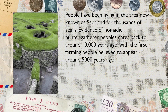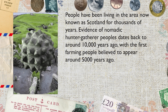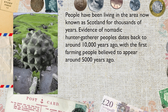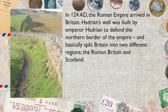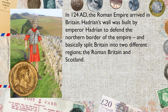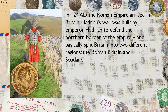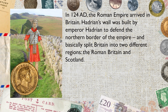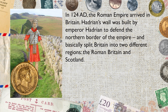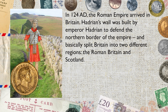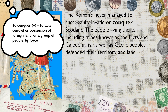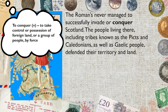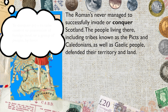People have been living in the area now known as Scotland for thousands of years. Evidence of nomadic hunter-gatherer peoples dates back to around 10,000 years ago, with the first farming people believed to have appeared around 5,000 years ago. In 124 AD, the Roman Empire arrived in Britain. Hadrian's Wall was built by the Emperor Hadrian to defend the northern border of the Empire. It basically split Britain into two different regions: Roman Britain and Scotland. The Romans never managed to successfully invade or conquer Scotland. The people living there, including tribes known as the Picts and Caledonians, as well as Gaelic people, defended their territory and land.